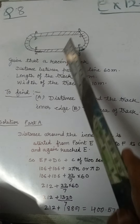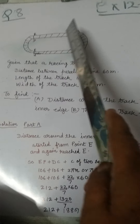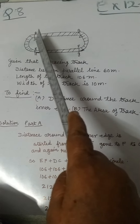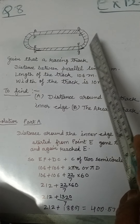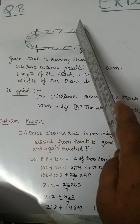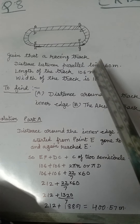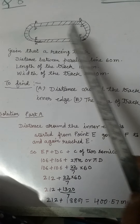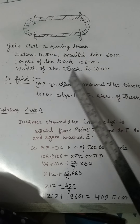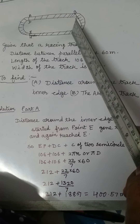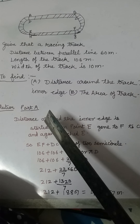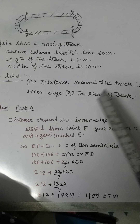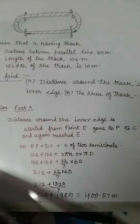In this question, a racing track is given in a shape having semicircular ends. The CD part and EF part are two parallel lines, and the distance between these two parallel lines is given as 60 meters. The length of the track, meaning CD, is given as 106 meters, and the width of the track is given as 10 meters. The width of the track means the shaded part. We have to find the distance around the track along its inner edge, and the area of the track.